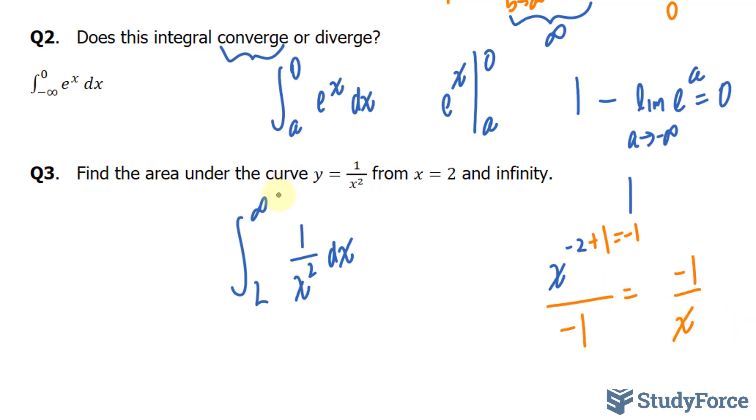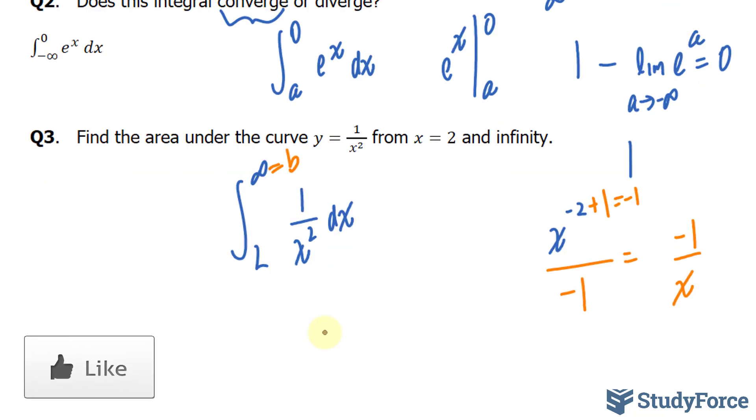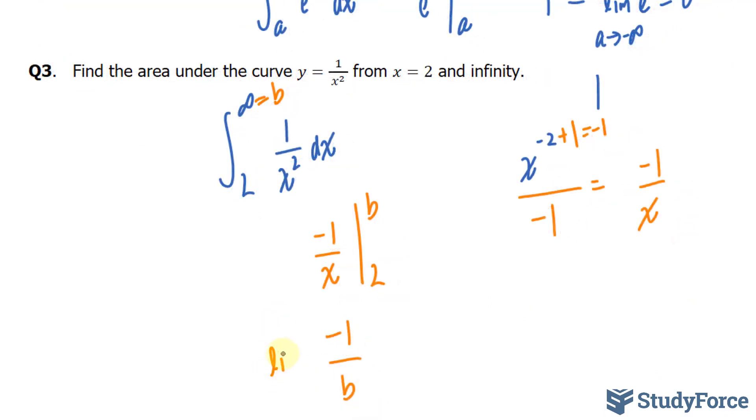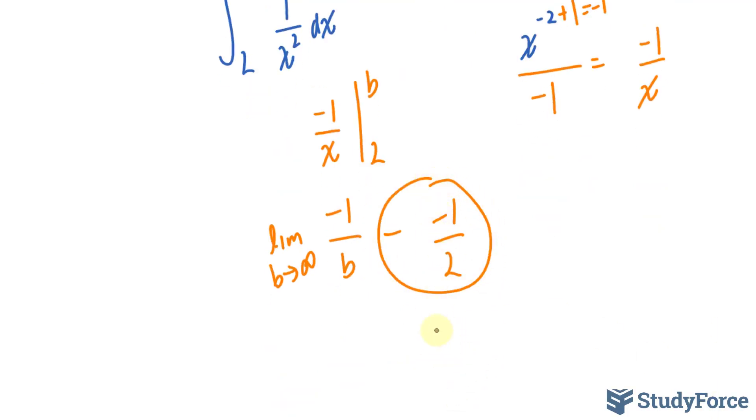This is our integral. I'll switch this with an arbitrary letter. Let's call it b. We have negative 1 over x evaluated at b and 2. Starting with b, we have negative 1 over b. Now the limit as b approaches infinity minus negative 1 over 2. This part becomes positive half.